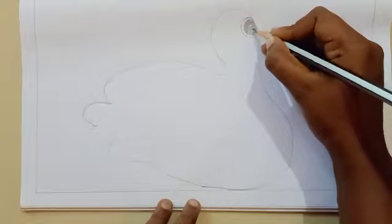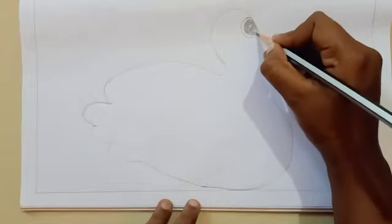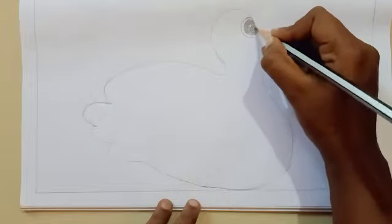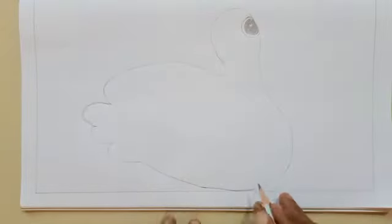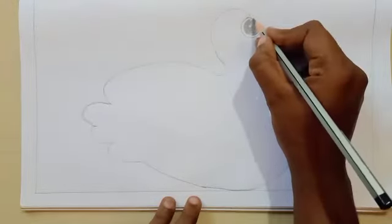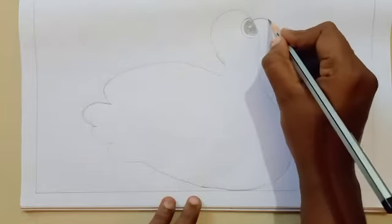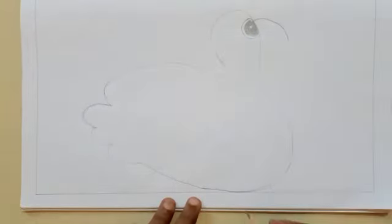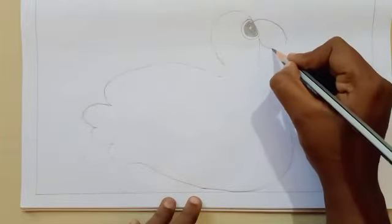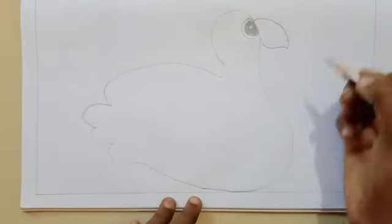The next thing is to draw the beak. Starting from the eye itself, just give a bend like this and here like this, and connect it over here.